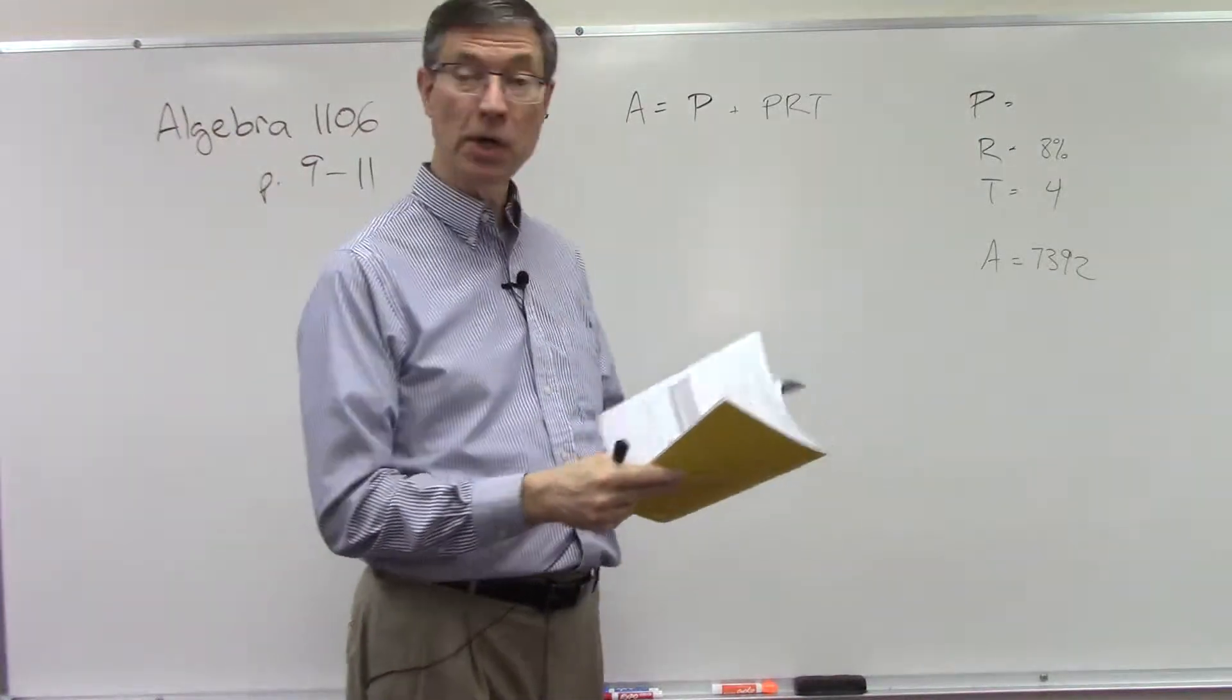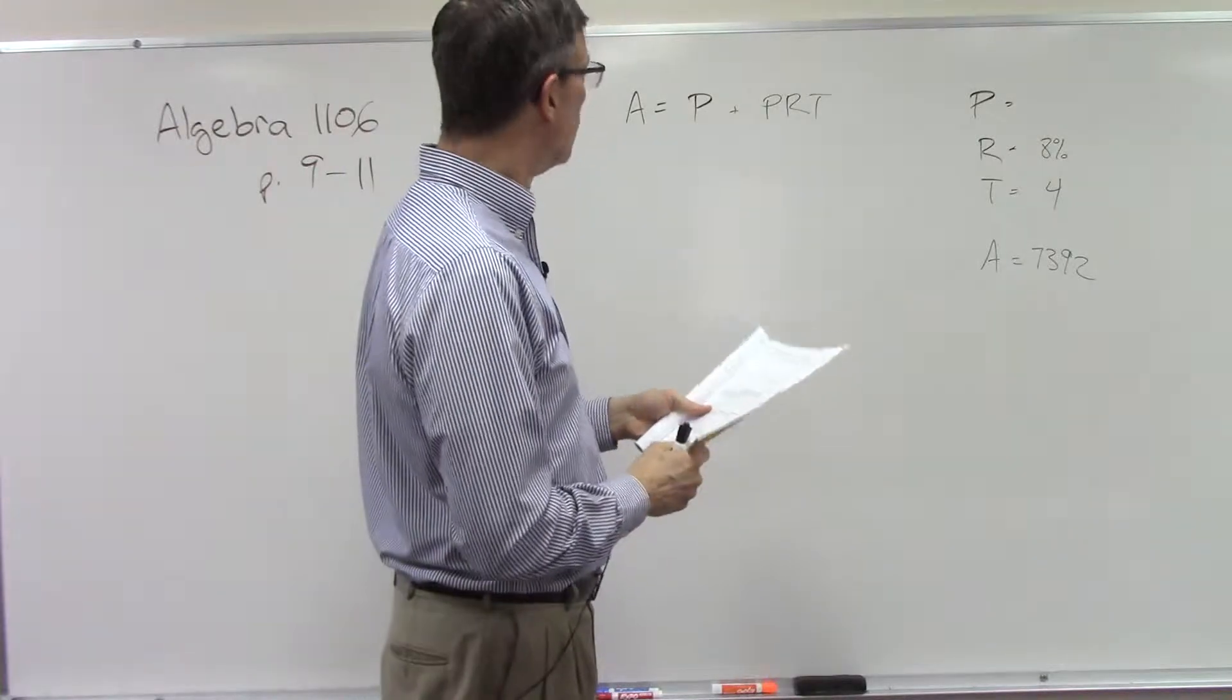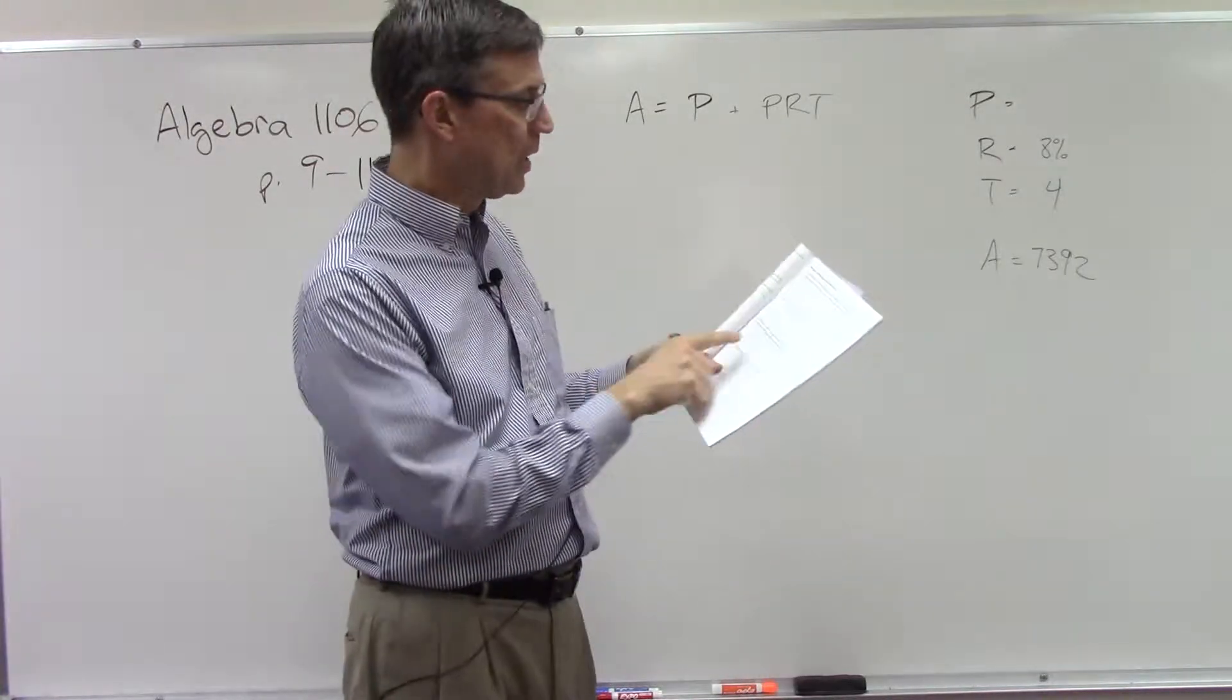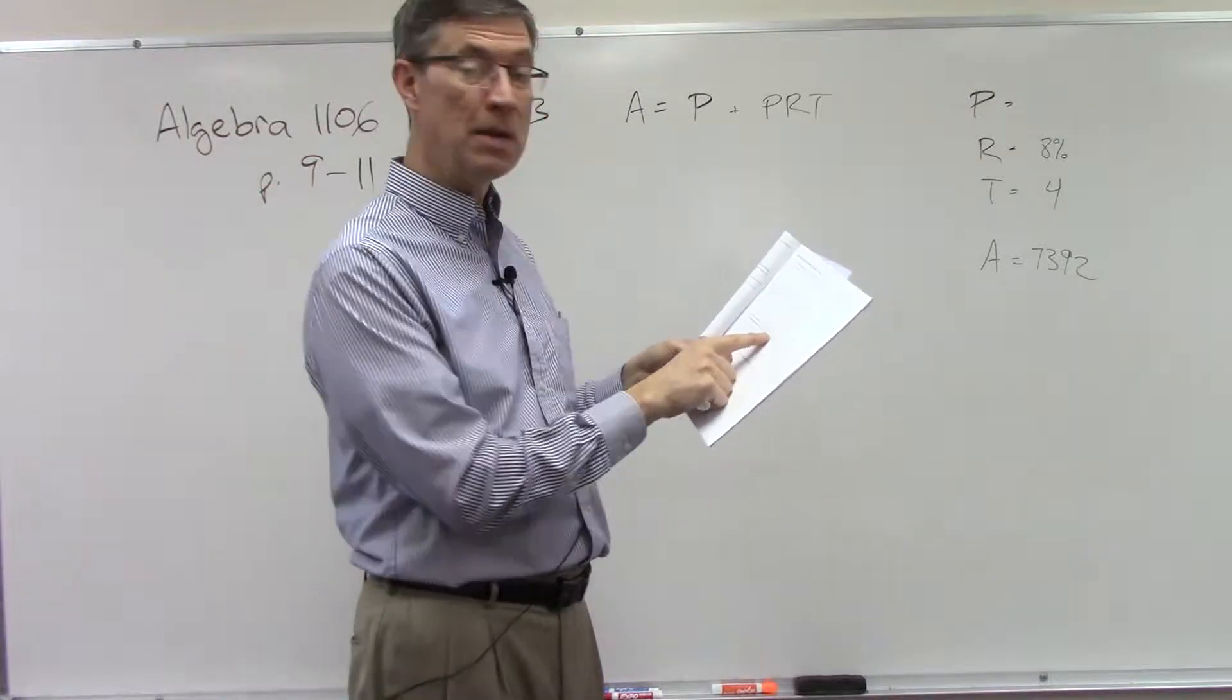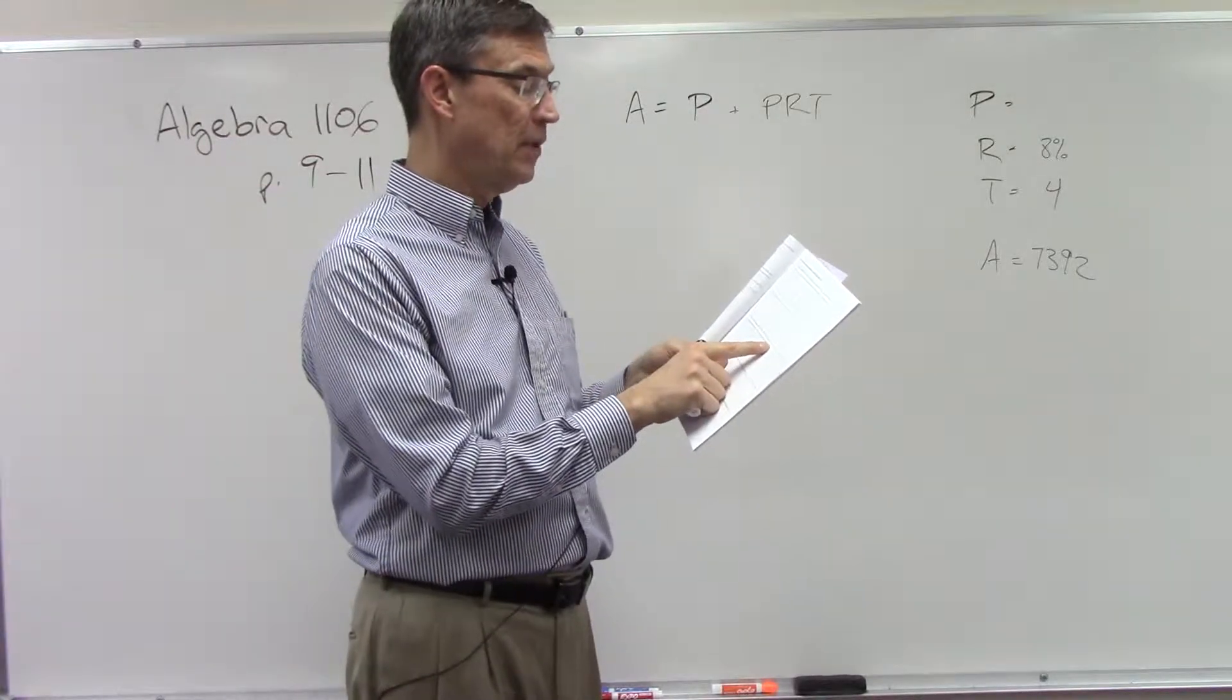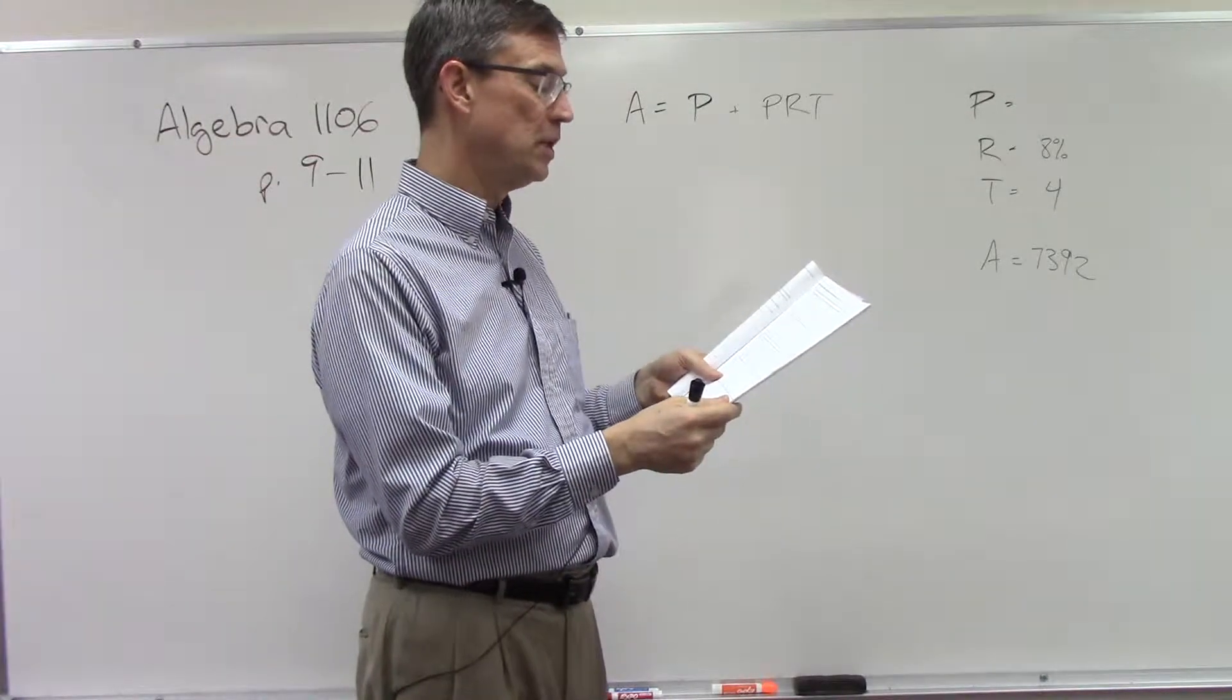Question number three says: How much money did a farmer borrow at 8 percent per year if at the end of four years he had repaid $7,392, which included the interest?